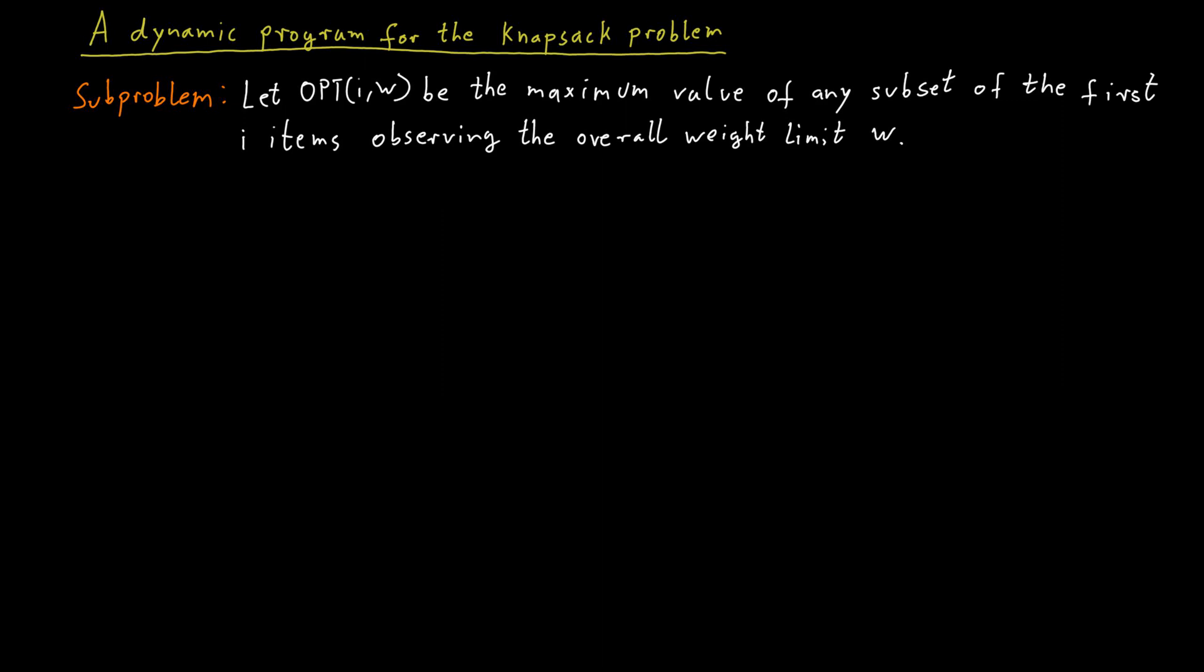And so we are just asking if we only can use the first i items to potentially include in the knapsack and our weight limit is changed to lowercase w, what is the optimal value we can get from this? What is the possible maximum value we can achieve for this particular sub-problem?